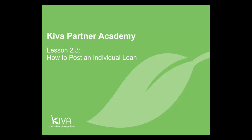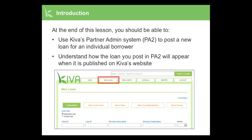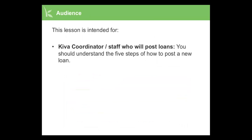Welcome to the Kiva Partner Academy. This lesson explains how to post a new loan for an individual borrower. At the end of this lesson, you should be able to use Kiva's partner admin system, PA2, to post a new loan for an individual borrower, and understand how the loan you post in PA2 will appear when it is published on Kiva's website. This lesson is intended for the Kiva coordinator and any other staff who will post loans. You should understand the five steps of how to post a new loan.